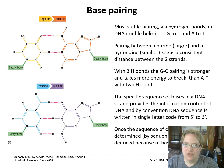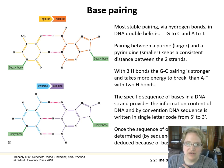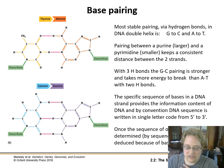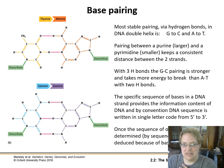One purine is always going to link up with one pyrimidine, and this consistent pairing keeps a consistent distance between the two strands. Thymine (pyrimidine) always pairs with adenine (purine), and cytosine (pyrimidine) always pairs with guanine (purine). In A-T pairing we have two hydrogen bonds; in C-G pairing we have three hydrogen bonds, so C-G pairing is stronger and takes more energy to break. The order of A, G, C, T along one strand gives us our genetic code, read 5' to 3'. If you know one strand's sequence, you can determine the other.